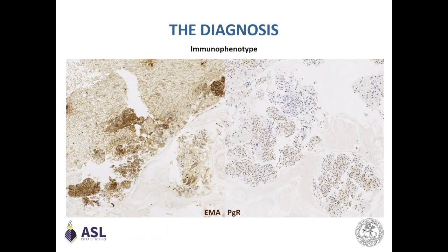Then, thinking about the morphology, we performed EMA and progesterone receptor staining. These two stains are positive in meningioma, and the morphology is very similar to that of a meningioma. And here we had the jackpot — both stains were positive. We were therefore leaning toward a diagnosis of meningioma, either a metastatic meningioma or a primary meningioma of the lung. We phoned the radiologist and asked for a CT head scan of the patient.